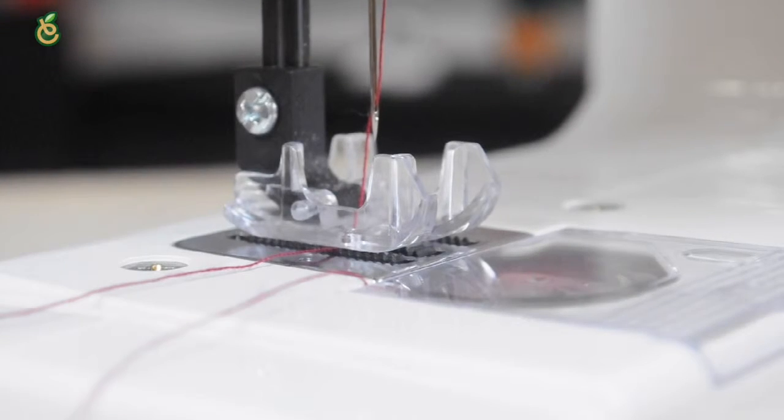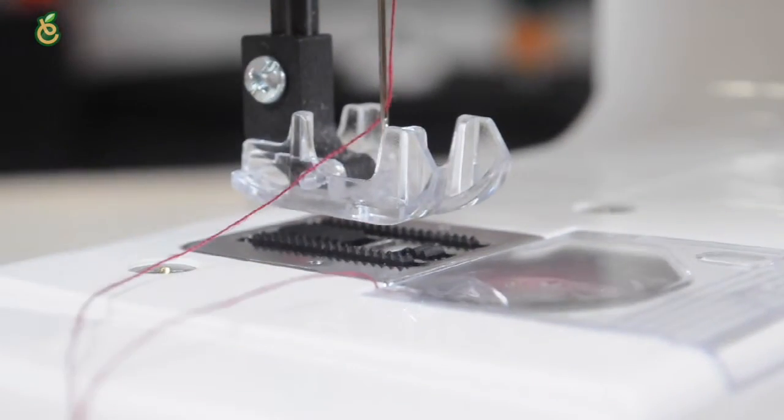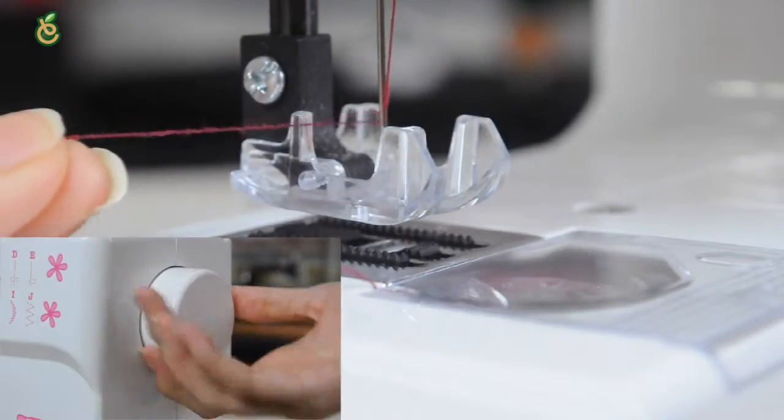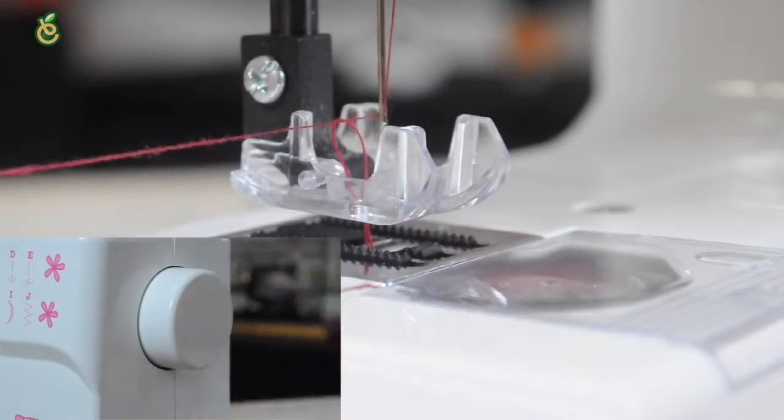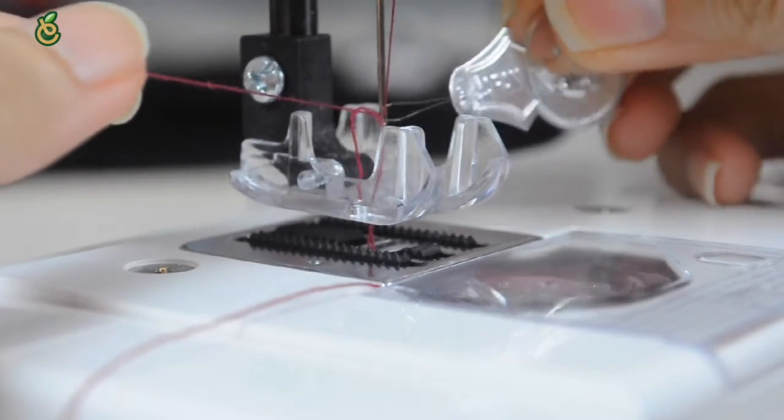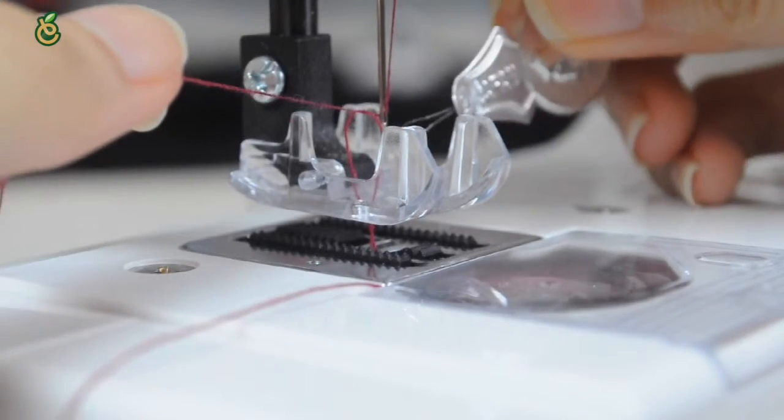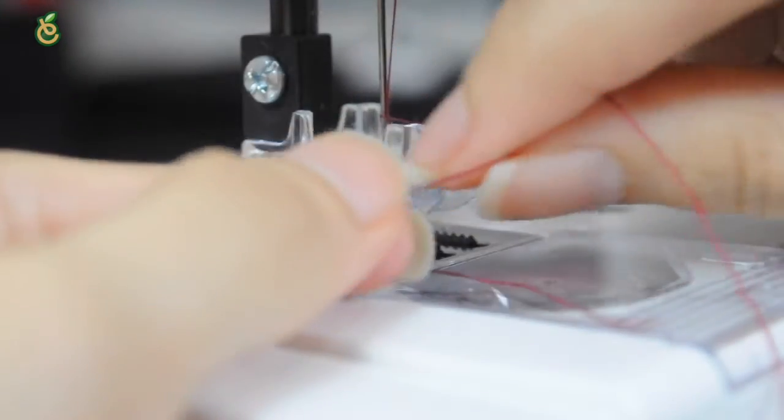To draw up the bobbin thread, raise the presser foot, hold the needle thread lightly with your left hand, and rotate the hand wheel counter-clockwise towards you. Bring the bobbin thread up by pulling the needle thread. Pull both threads 10-15 cm under and behind the presser foot.